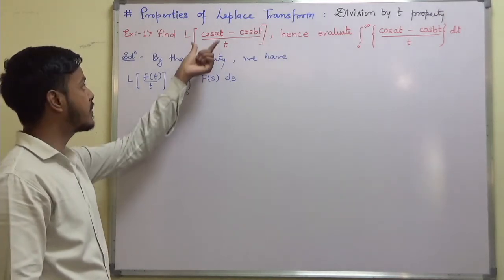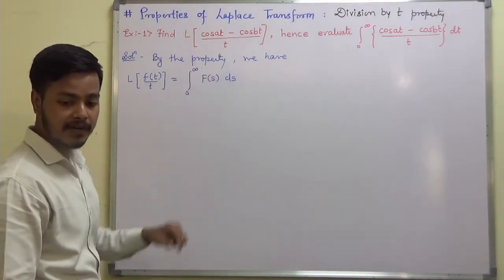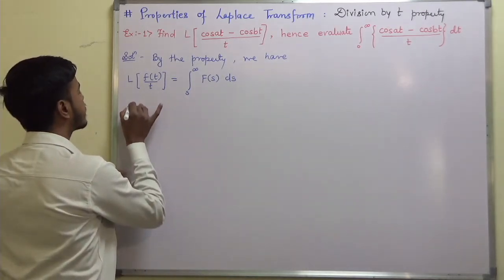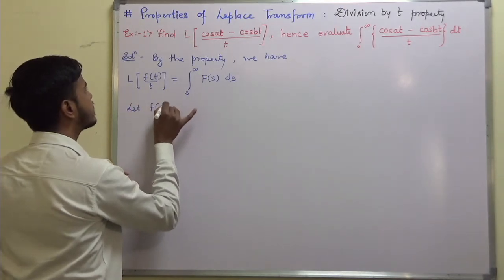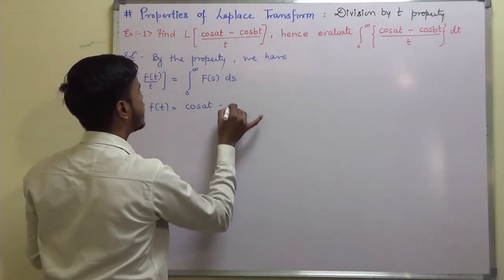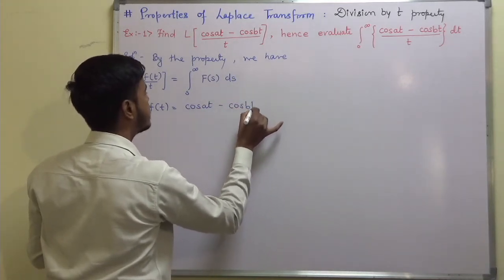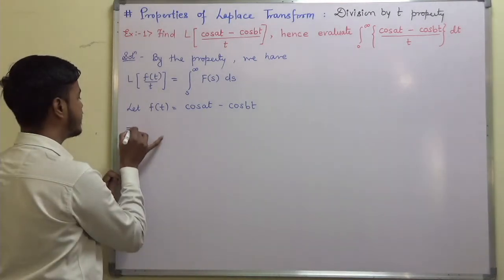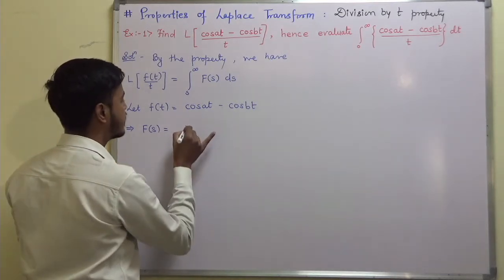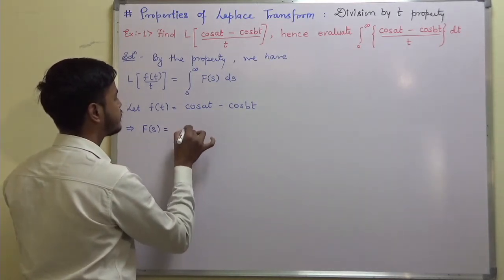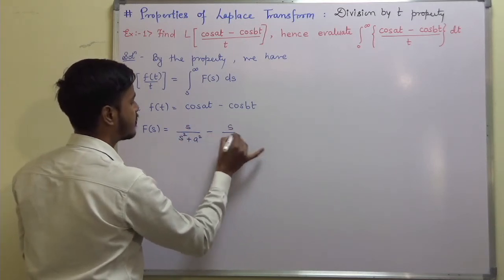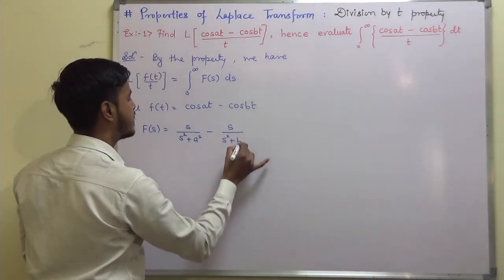Now we have to find the Laplace transform of f(t)/t. Here f(t) = cos at - cos bt. So F(s), the Laplace transform of f(t), is s/(s² + a²) minus s/(s² + b²).